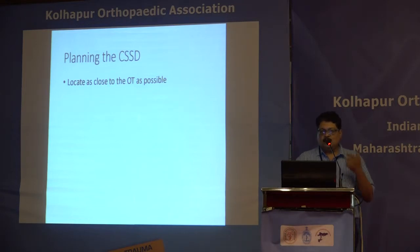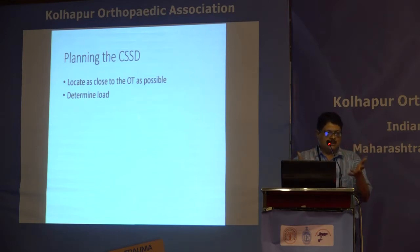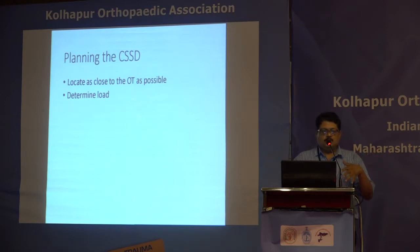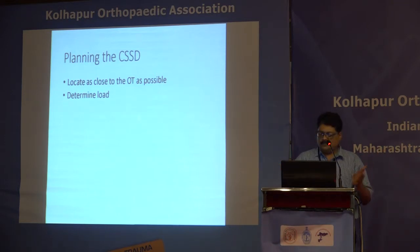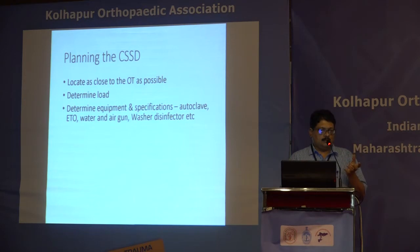When planning the CSSD, locate it as close to the OT as possible — clean areas close to the OT, dirty areas as far away as possible. Determine the sterilization load, which depends on the surgeries done each day and how many trays and drums are required per surgery. This varies between surgeons: some use just one or two trays, others may open four or five trays.